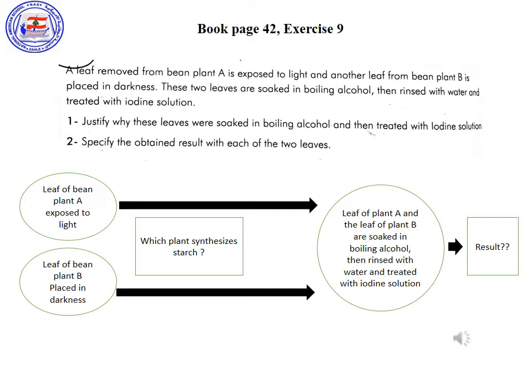A leaf removed from bean plant A is exposed to light and another leaf from bean plant B is placed in darkness. The variable factor is light because leaf A is exposed to light while leaf B is placed in darkness. These two leaves are soaked in boiling alcohol, then rinsed with water and treated with iodine solution. Which plant synthesizes starch — plant A or plant B? Of course plant A, because it is exposed to light which is an essential nutrient for the process of photosynthesis.